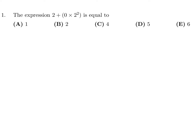Question number 1. The expression 2 plus 0 times 2 squared. So that's 2 plus 0 times 4. And then 0 times 4 is 0. So then we just have 2. Therefore, number 1, the answer is B.